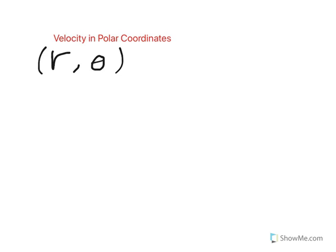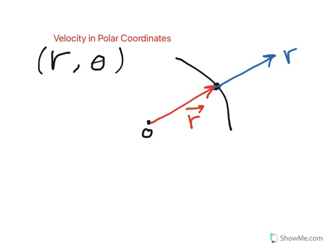Basically, if you have a curved path and a particle is traveling along it, we need to keep track of the position of this particle from some origin O. We can track the position using a position vector R. The radial axis is defined as the extension of this radial position vector, so if you extend it, this becomes the R axis. Perpendicular to the R axis is the theta, or transverse, axis.